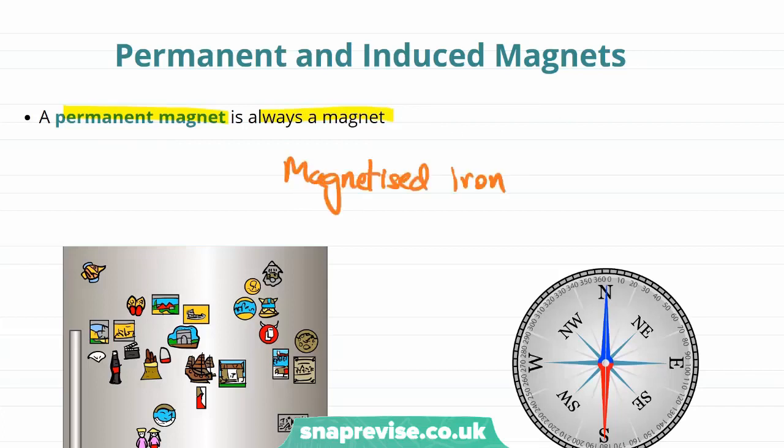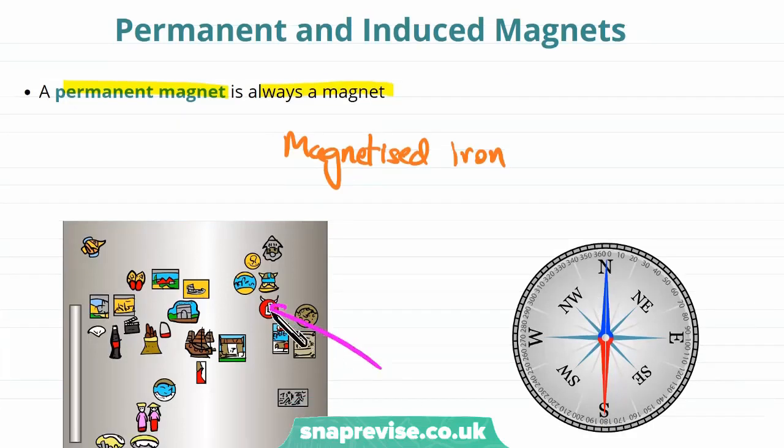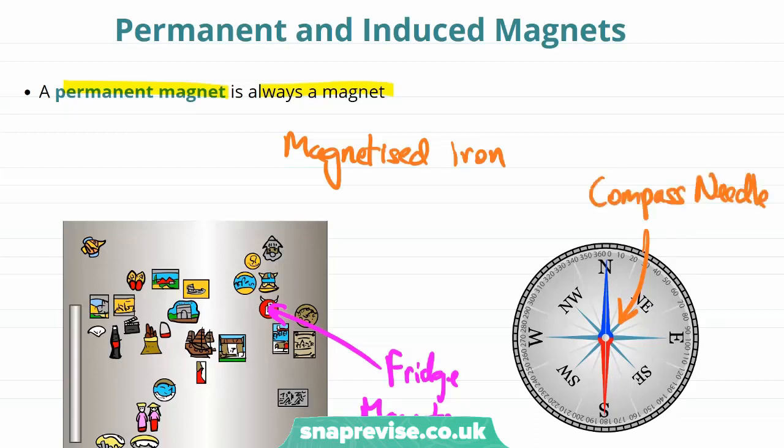And these permanent magnets show up in a couple of different everyday situations. For example, the magnets on a fridge, like these magnets here, are permanent magnets. They always have a magnetic field. The magnet on the needle of a compass is also a permanent magnet. In other words, it always creates its own magnetic field.